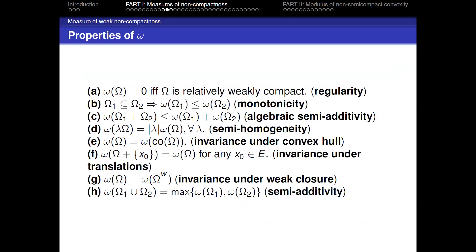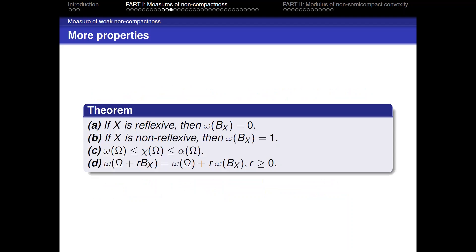There are also properties of ω. Usually, regularity is satisfied for relatively weakly compact sets: w(Ω) = 0 if and only if Ω is relatively weakly compact. The properties are almost similar to those of α and χ.